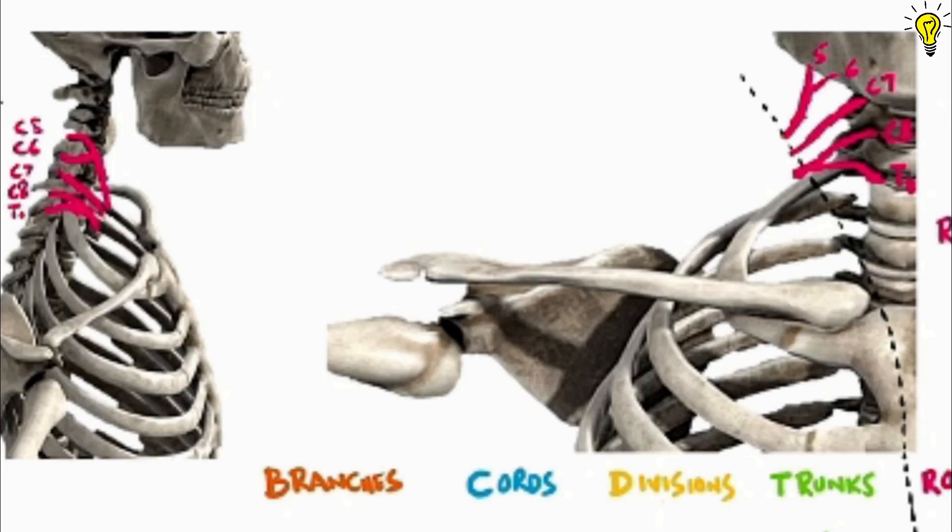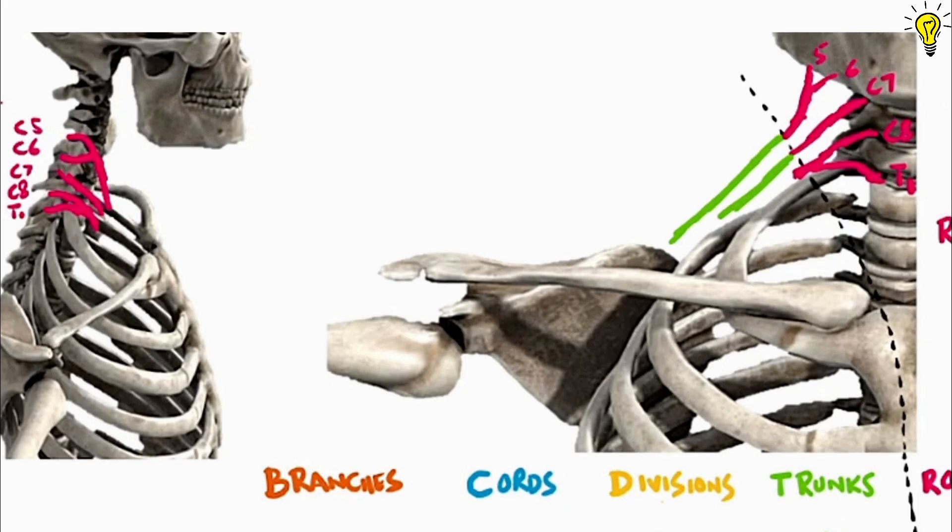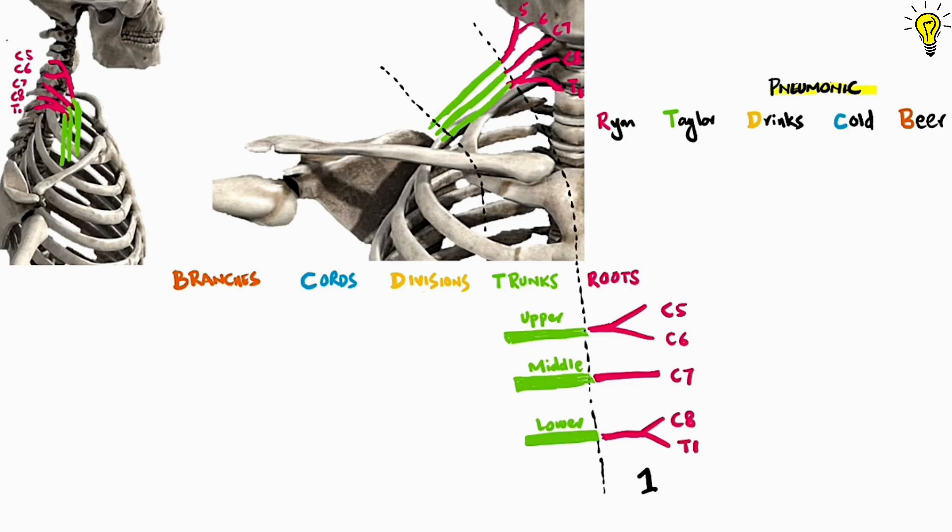As said before, C7 root goes forward without combining to form the middle trunk. Now this is important. These trunks are not only moving downwards and laterally as seen here. But if we look at them from the sides, they are also moving anteriorly towards the clavicle. So this forms zone 2 of brachial plexus, the trunks.